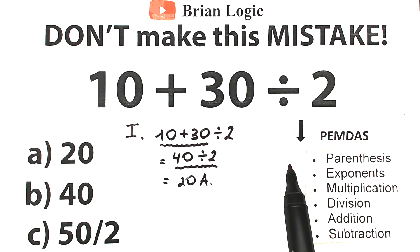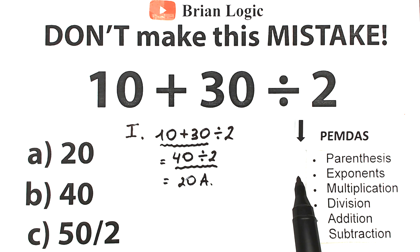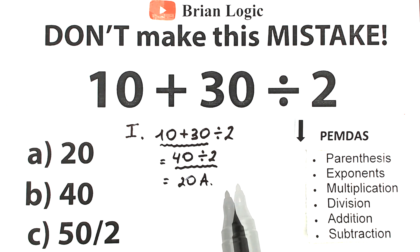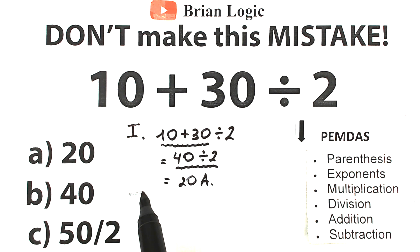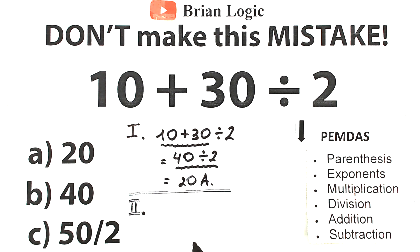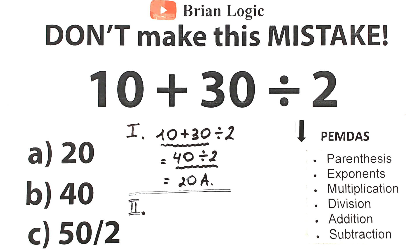First we evaluate parentheses and brackets, then evaluate exponents, then evaluate the multiplication and division group, and the last step is the addition and subtraction group. In other words, parentheses have the highest priority, and the addition and subtraction group have the lowest priority. Now let's solve this question according to this order of operations — the second interpretation. Parentheses, exponent, multiplication, division, addition, subtraction.